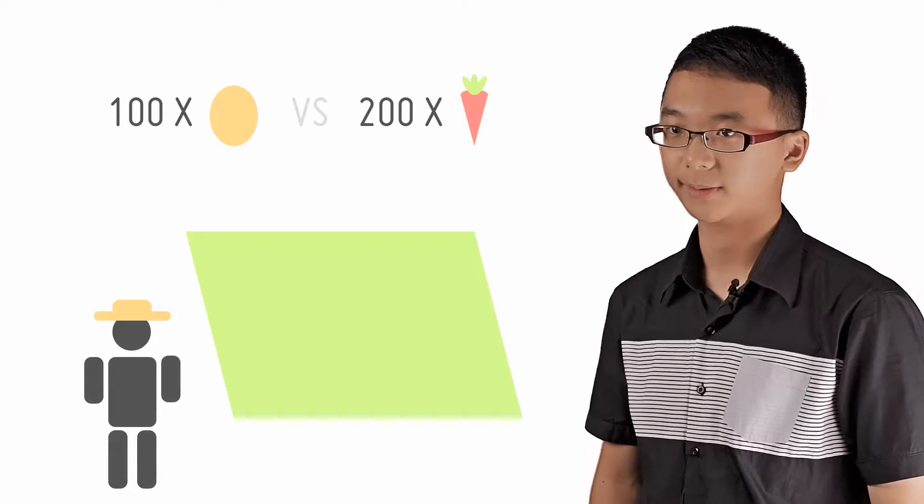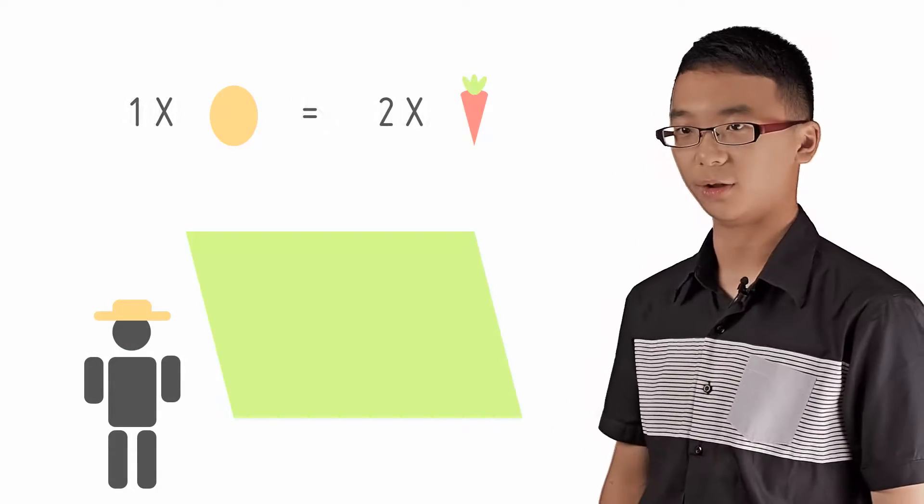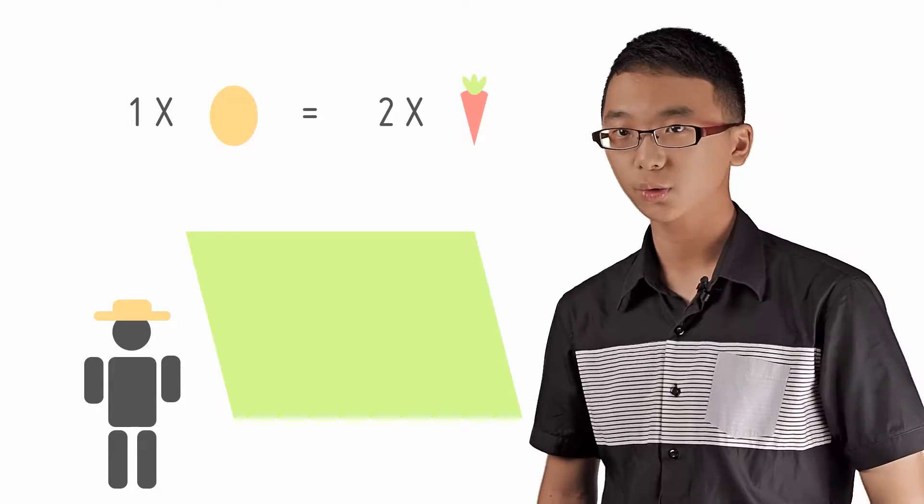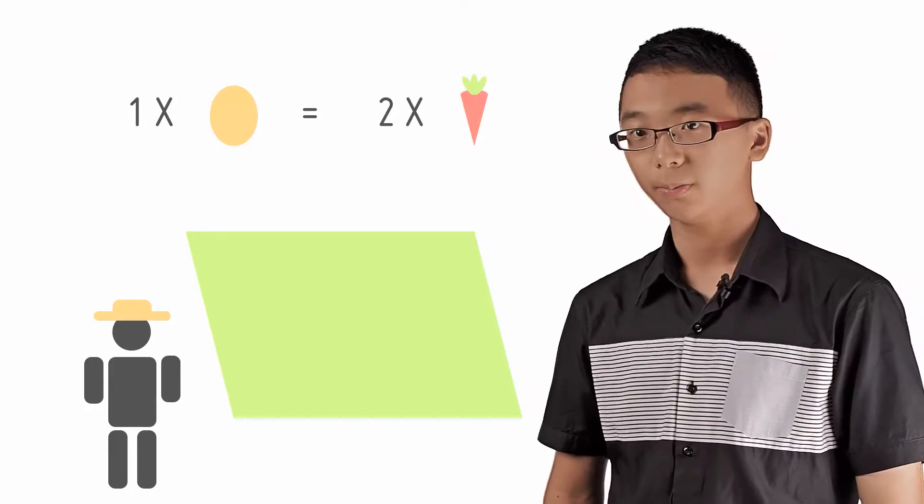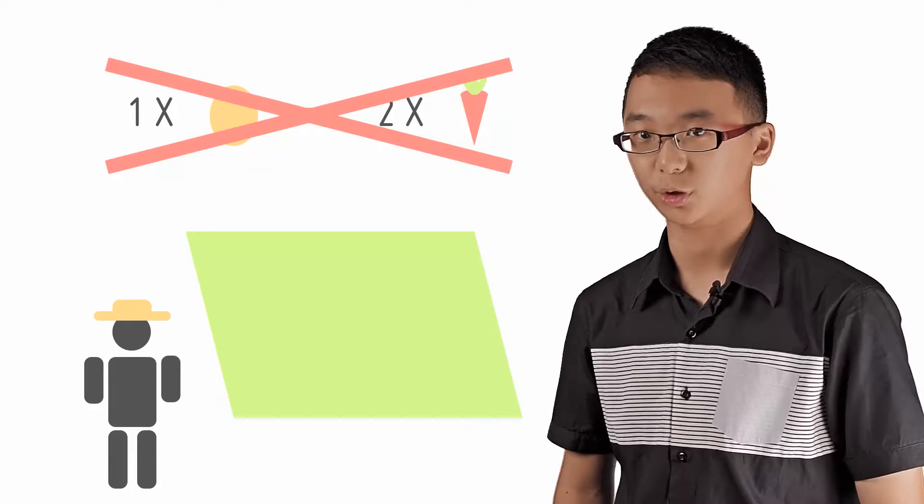If I grow 100 potatoes, the opportunity cost is 200 carrots. Therefore, if I grow 1 potato, the opportunity cost is 2 carrots, sounds reasonable. But no, this is incorrect as it may not necessarily be true.